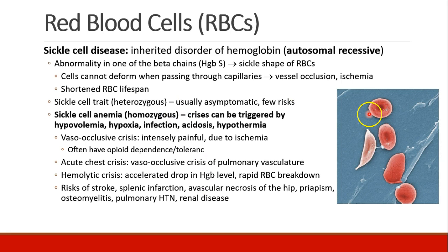When this happens, the red blood cells, instead of having a nice biconcave round shape that is easily deformed, become sickle-shaped. These cells aren't able to deform well when they pass through capillaries, and as a result the vessels can become occluded and the tissues supplied by them can become ischemic. The red blood cells also have a shortened lifespan. Many patients have sickle cell trait, meaning they are heterozygous — they have one hemoglobin S and one regular hemoglobin beta chain — and they are usually asymptomatic.